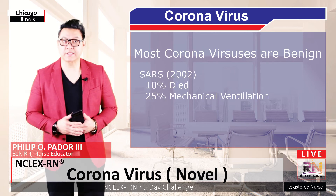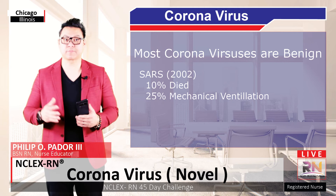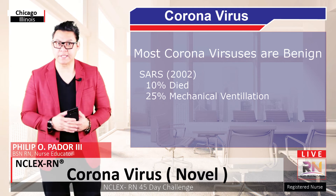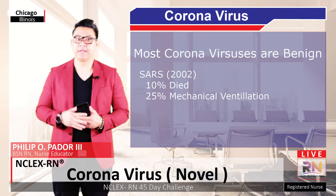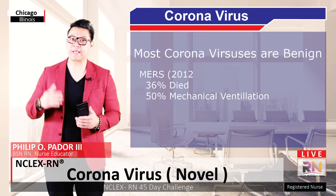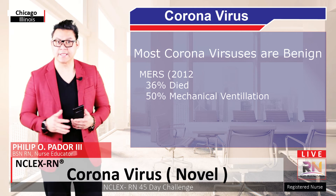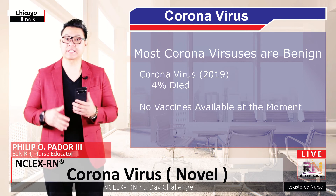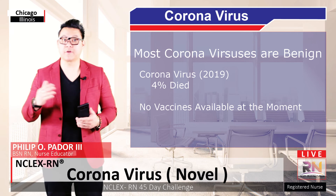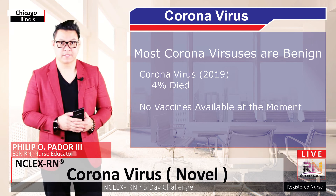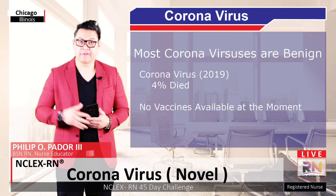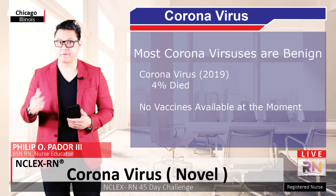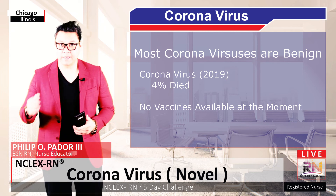While most coronaviruses are relatively benign, some cause serious problems. With SARS, 25% of patients required mechanical ventilation and 10% died. With MERS, over 50% of patients required mechanical ventilation and 36% died. So far, the good news with the Wuhan coronavirus is that the severity appears lower, with a fatality rate around 4% or even lower. Broad-spectrum antiviral drugs and vaccines are aggressively being researched to see if they can be used to help treat and prevent the disease, although no vaccines are available at the moment.